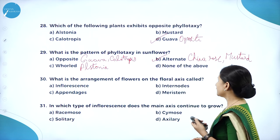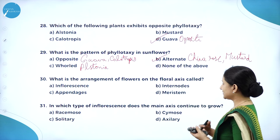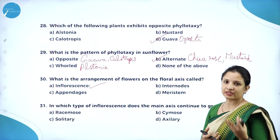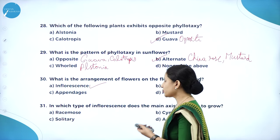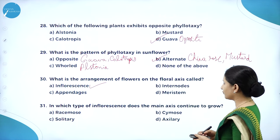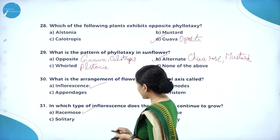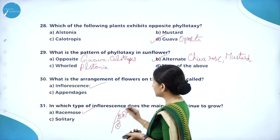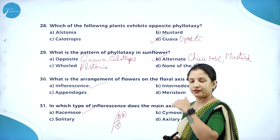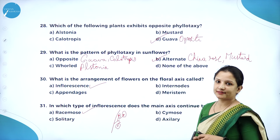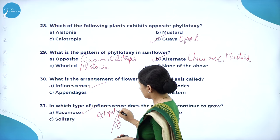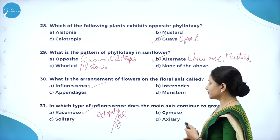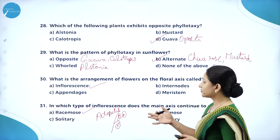What is the arrangement of flowers on the floral axis called? It is called inflorescence. There are two types: cymose and racemose. In which type of inflorescence does the main axis continue to grow? It is in racemose inflorescence, where the main axis continues to grow, younger flowers are at the top and older ones at the bottom — this is an acropetal arrangement. Cymose has limited growth; racemose has unlimited growth.